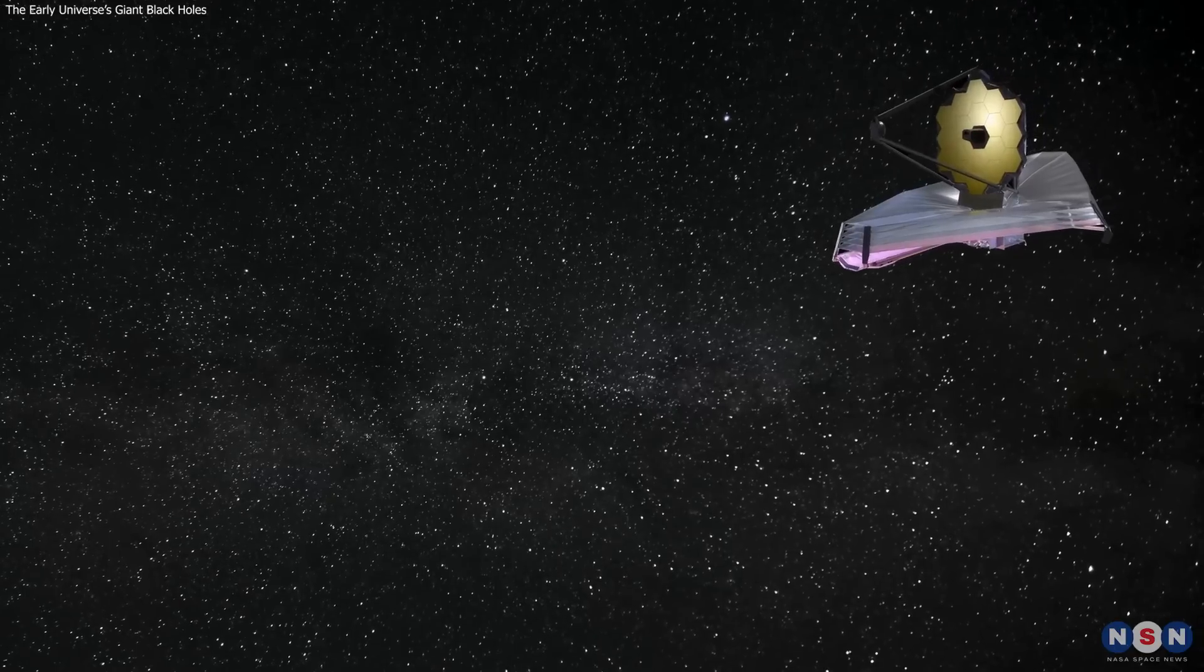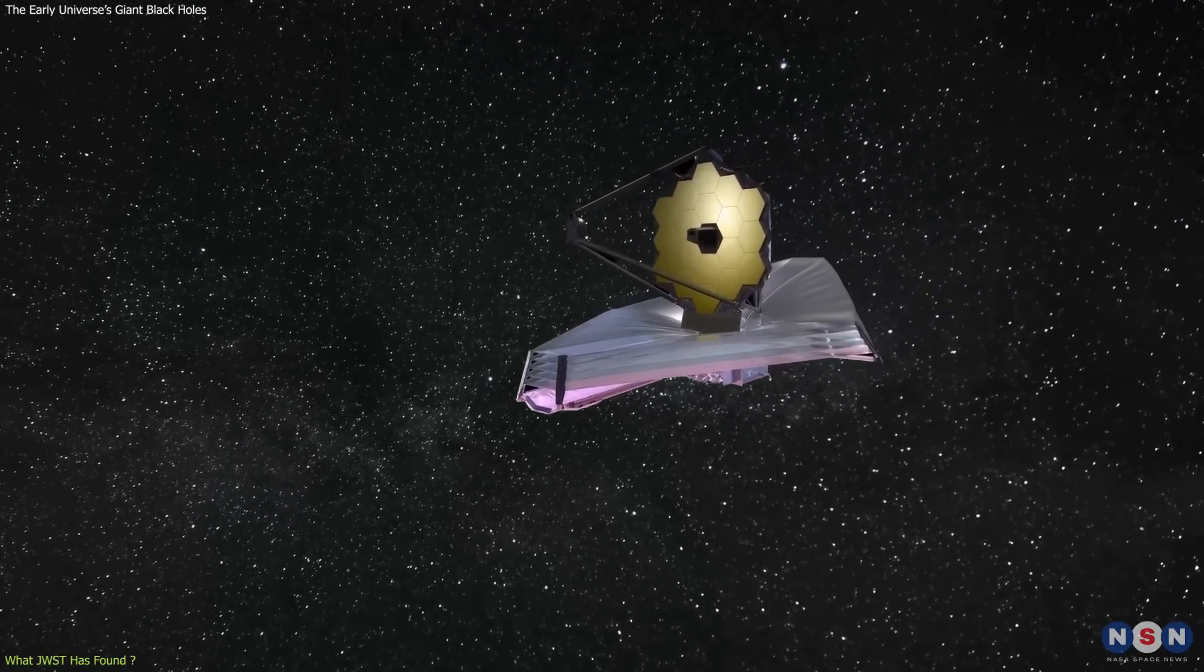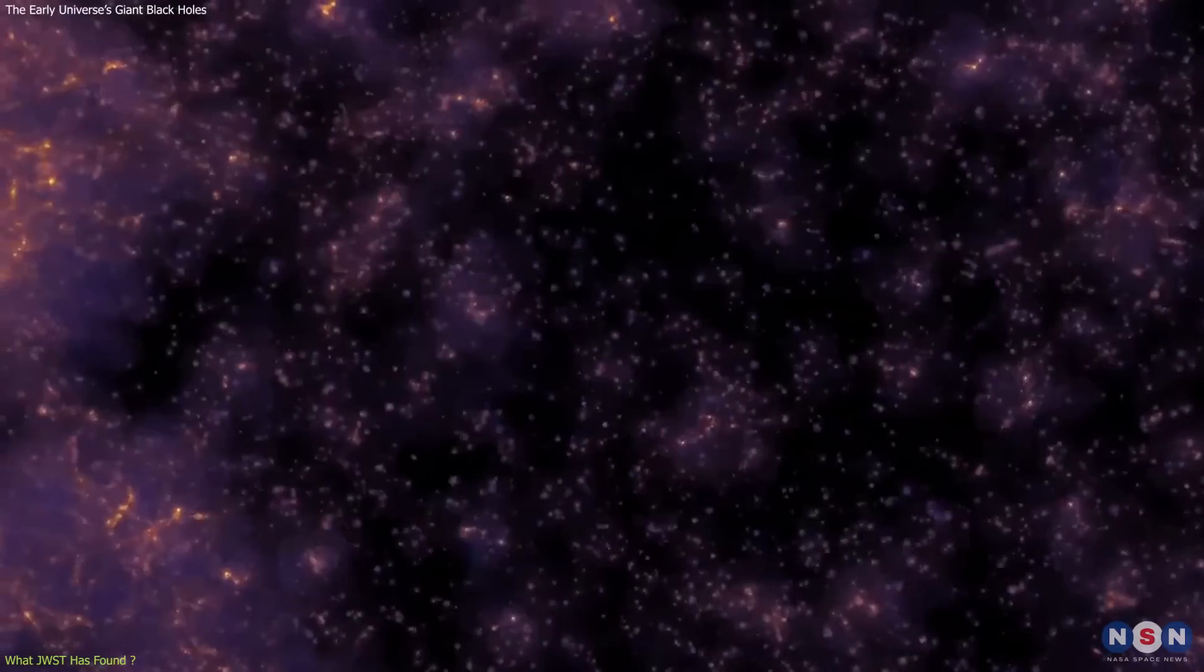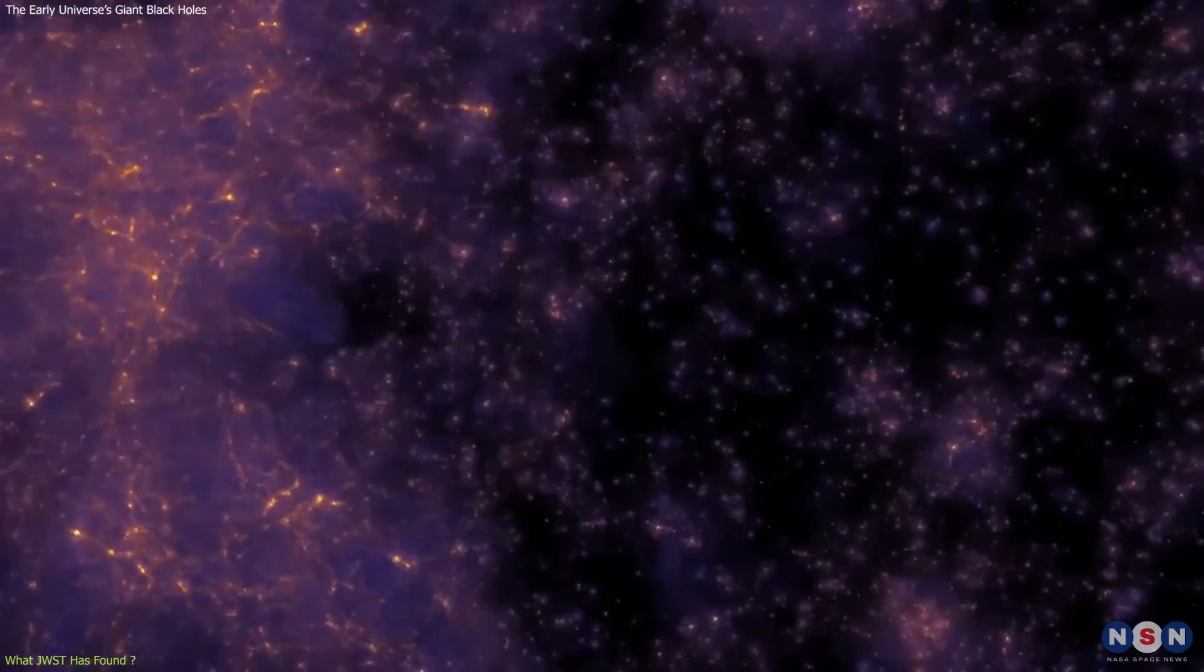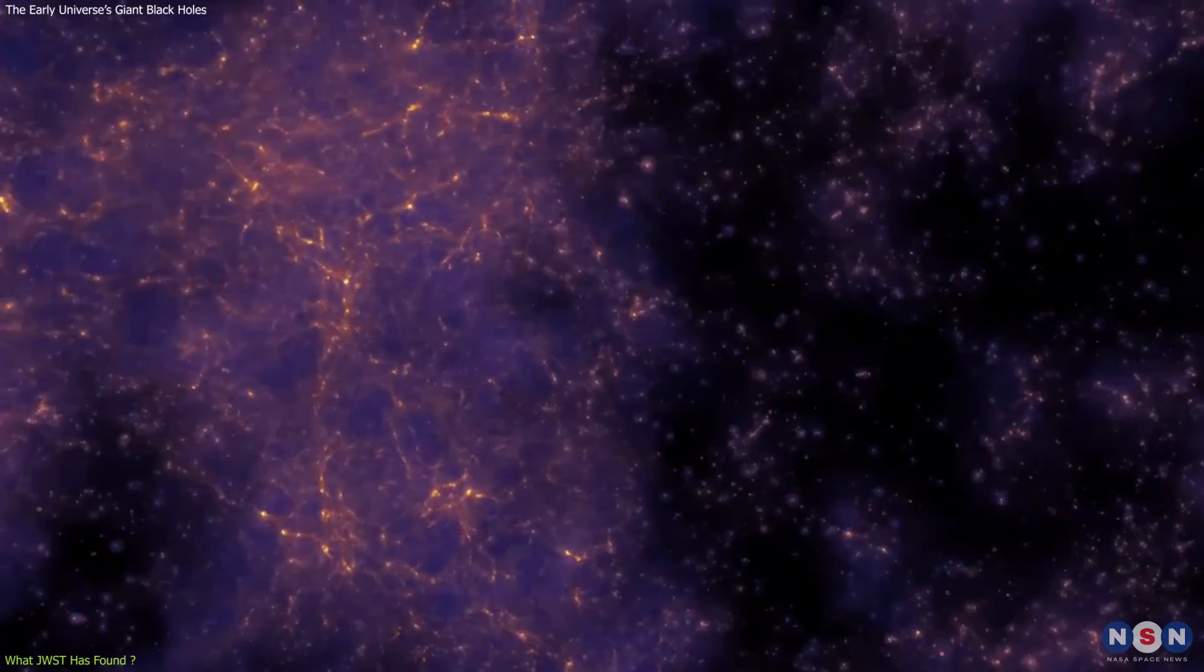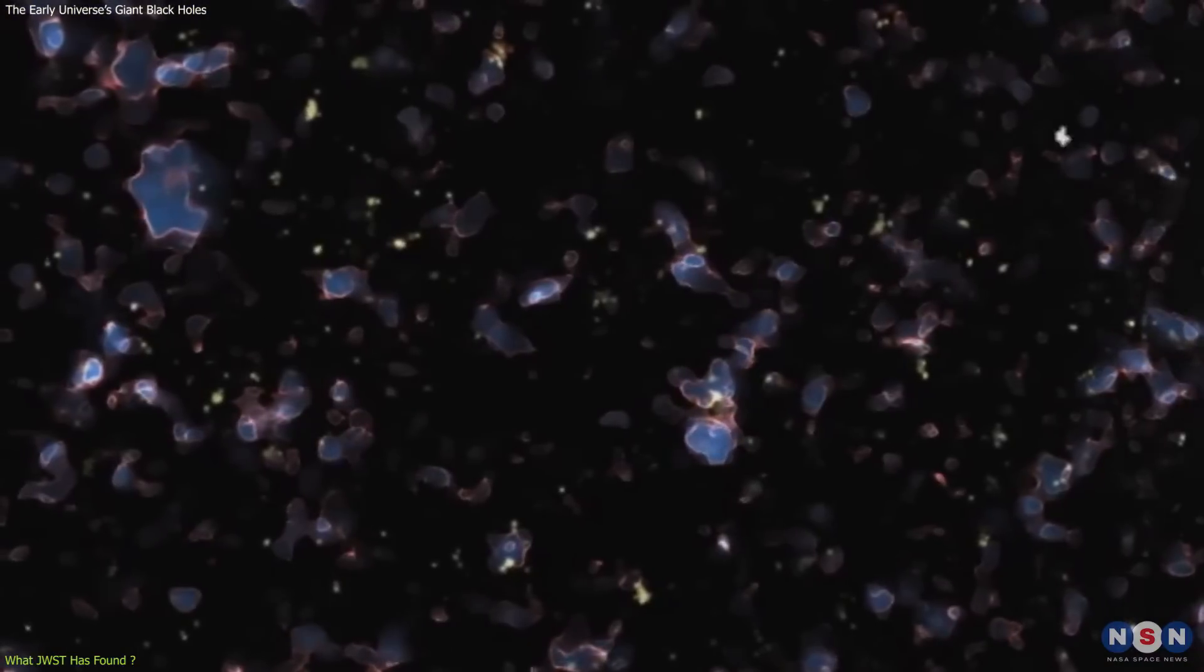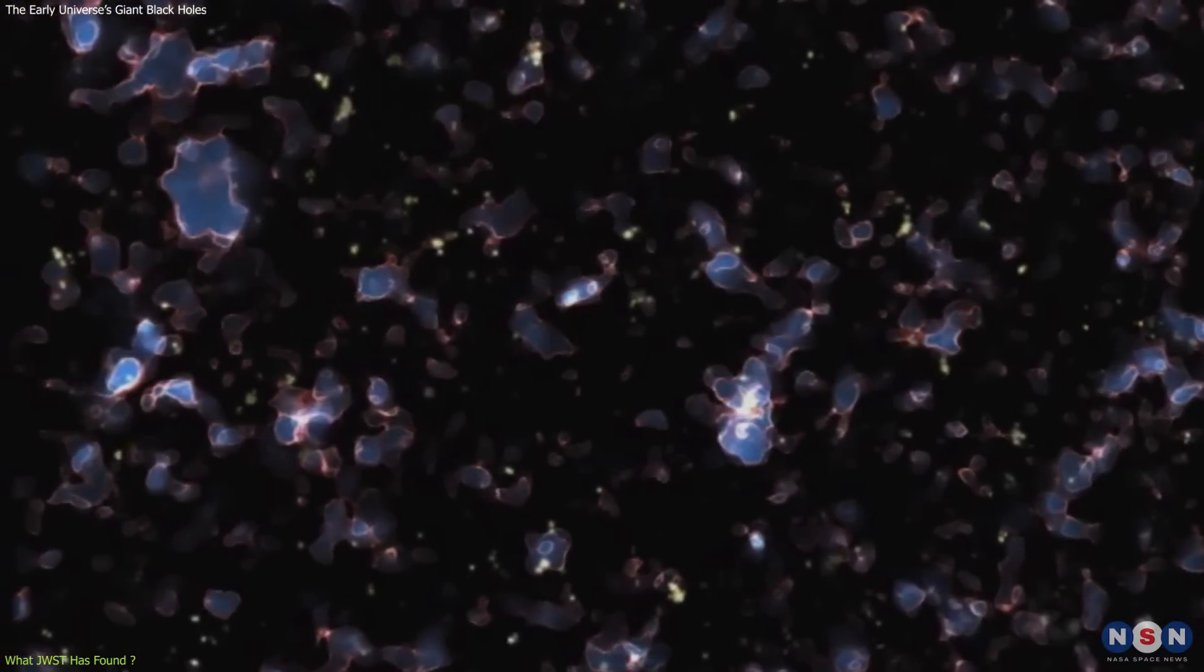One of James Webb's main goals is to study the first light in the universe, also known as cosmic dawn or reionization. This is the period when the first stars and galaxies formed out of the primordial gas that filled the universe after the Big Bang. This gas was mostly neutral hydrogen atoms that absorbed light rather than emitted it. As a result, the universe was dark and opaque.